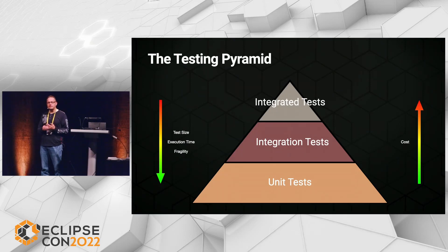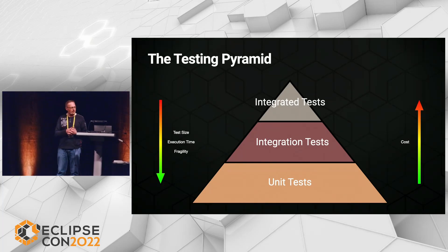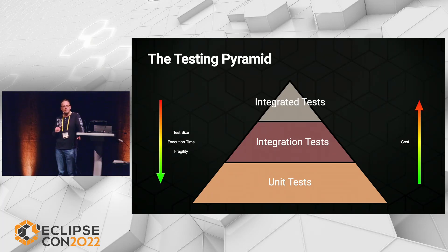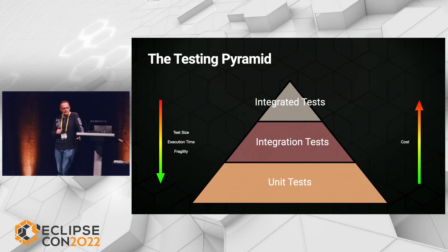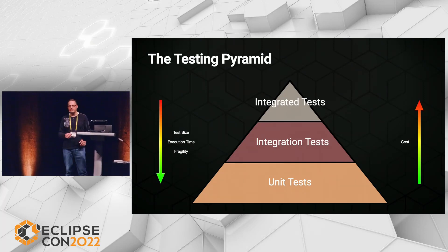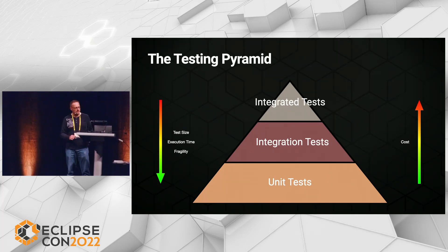You might know the testing pyramid. We love unit tests because they are small, fast, and quite stable — we should write most of our tests as unit tests. When we work with external resources, we're talking about integration tests, and we tend to write fewer of them because they are more heavyweight, change with the data model, and are more cumbersome to write. They run on a production-like environment and are much slower and more cost-intensive.